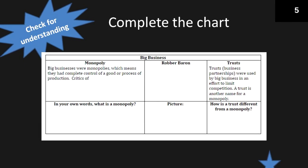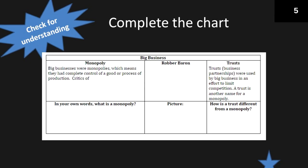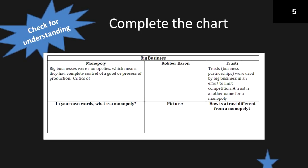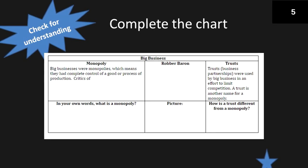Complete the chart: you already wrote down monopoly, now make sure you explain what a robber baron is. Where it says trust, that one's pretty much filled out. In your own words, write down what is a monopoly. Then where it says how is a trust different from a monopoly, go ahead and make sure you write that down as well.